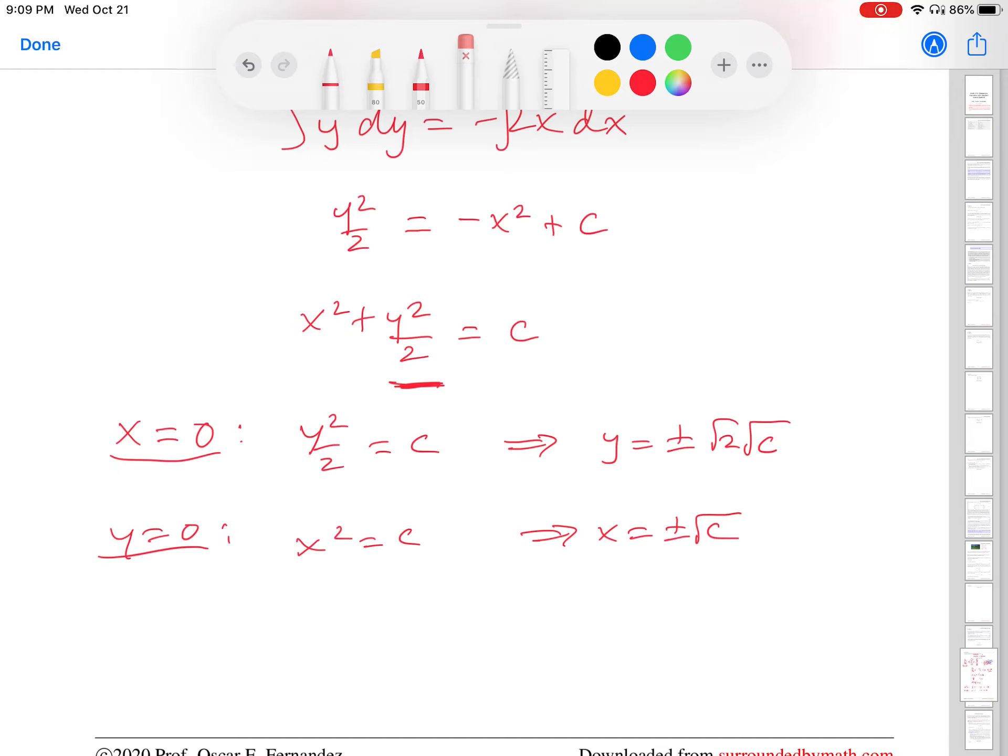So you can see that the y values are going to be bigger by square root of 2, which is, I don't know, 1.4-ish, than the x values when you're looking at the x and y intercepts. So this tells us, long story short, that the y-axis is the major axis.